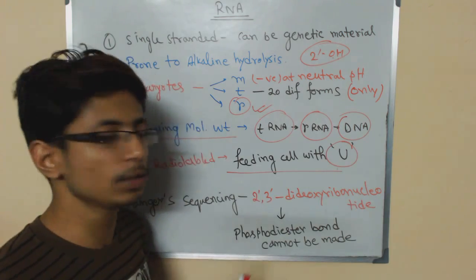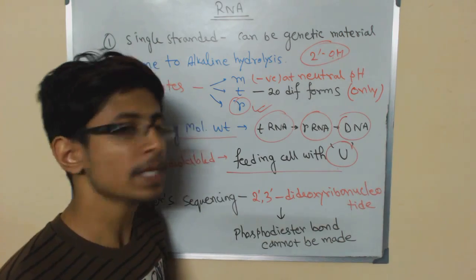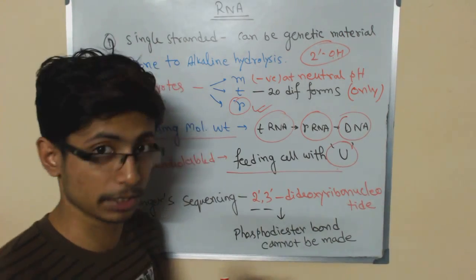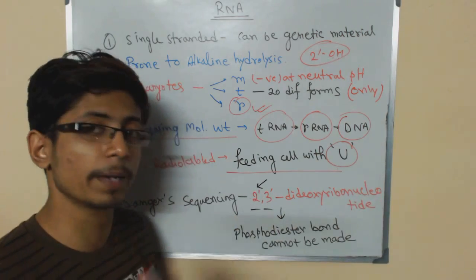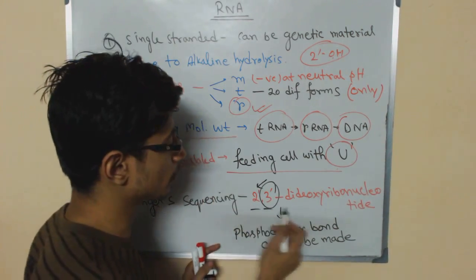Actually, nucleotide we are having only one hydroxyl group is absent in DNA, but in this case we've made two hydroxyl groups absent. One is the 2', another one is the 3'. Usually in DNA, 2' hydroxyl is absent, but we made this 3' hydroxyl absent too.